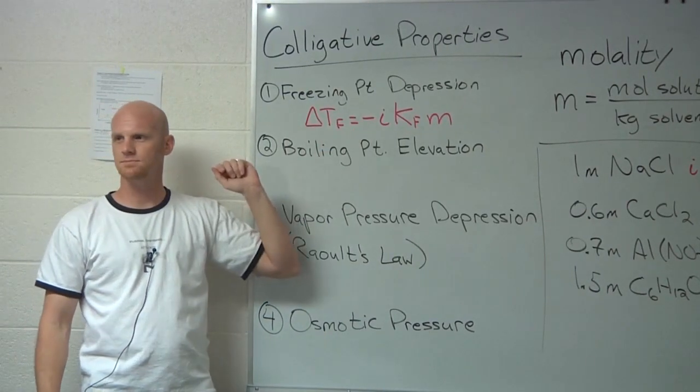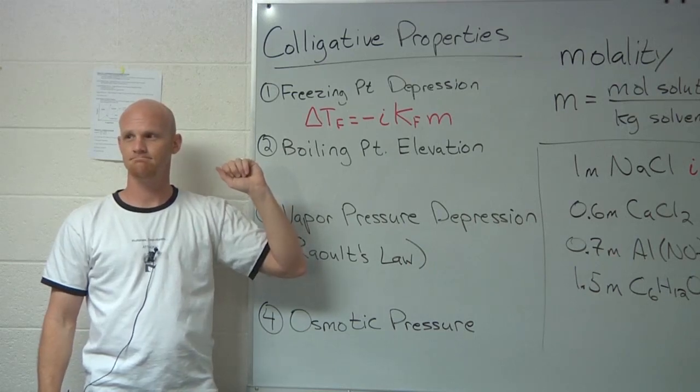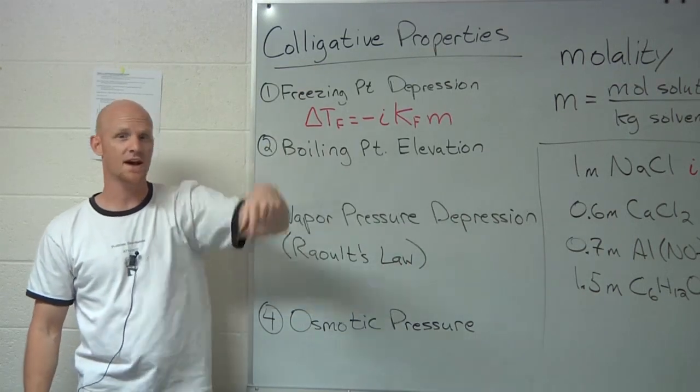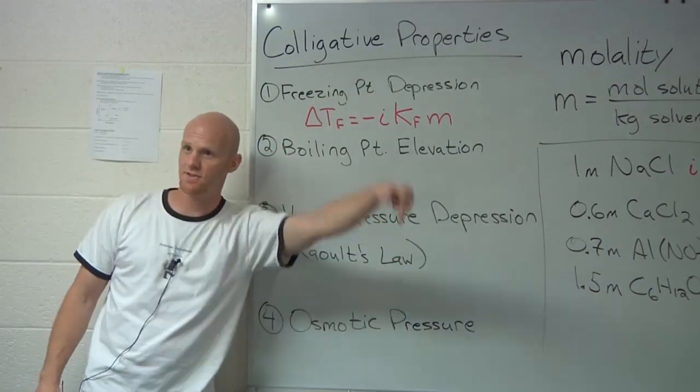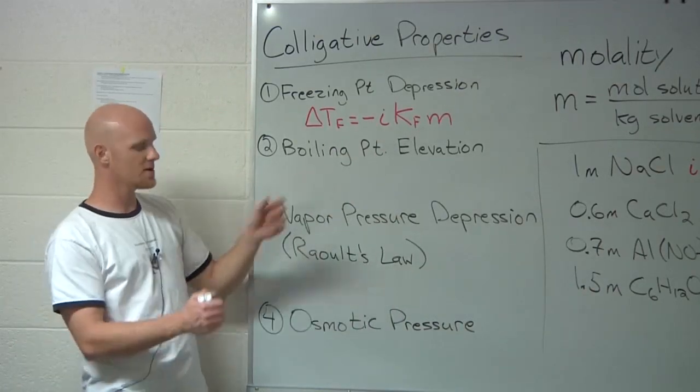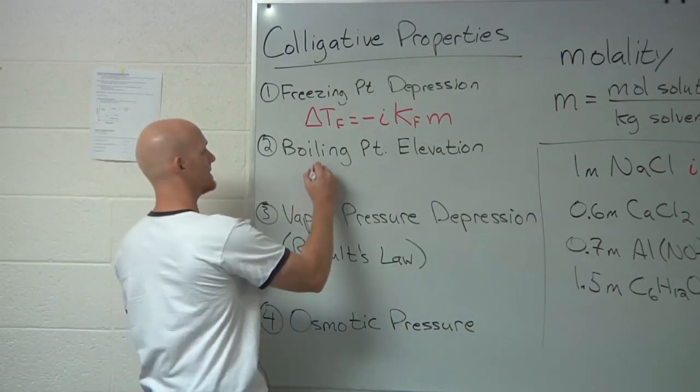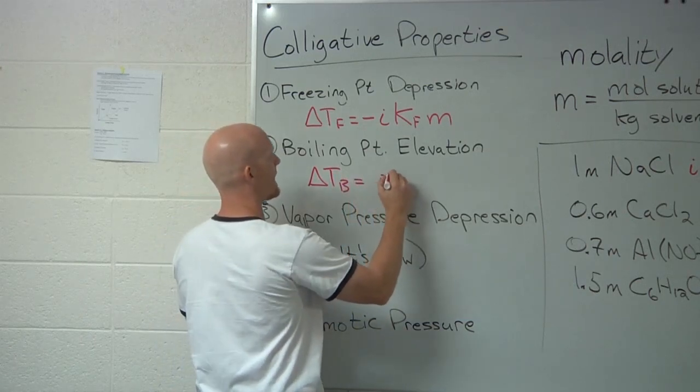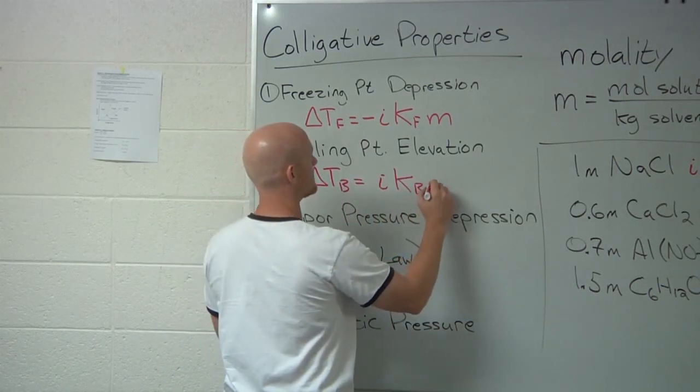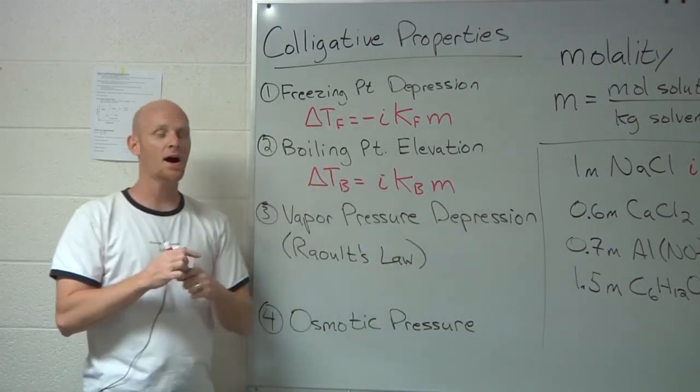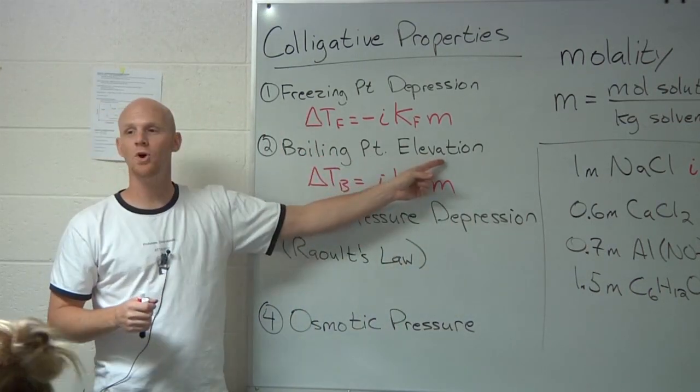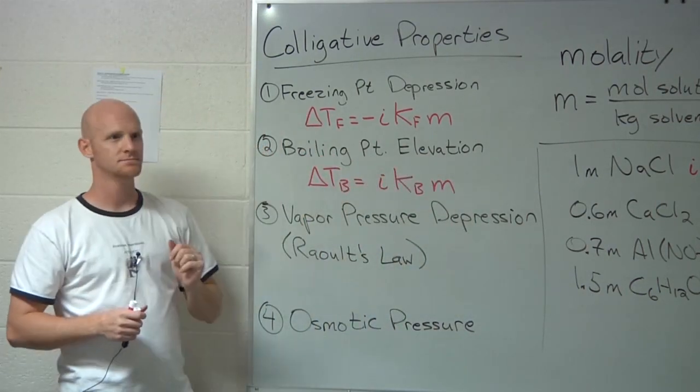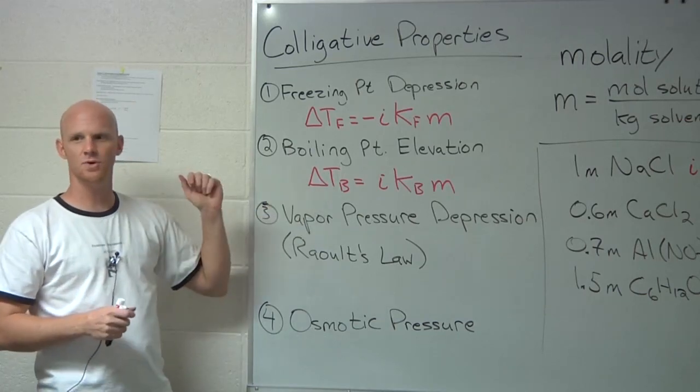Now, why is it negative? Yeah, it's decreasing, it's going down. The change is negative because it's going down. If we look, the boiling point elevation equation is very similar. Delta T boiling equals i·Kb·m. But it's positive now because boiling points go up, they're elevated. So it's a positive change from the boiling point.